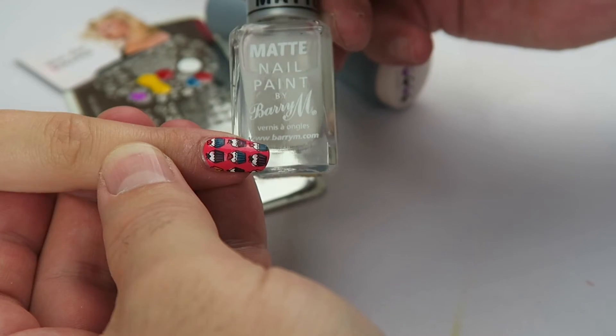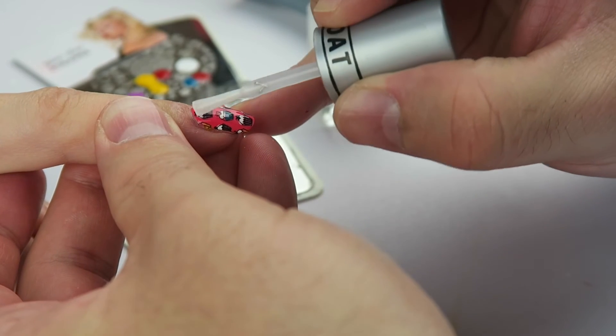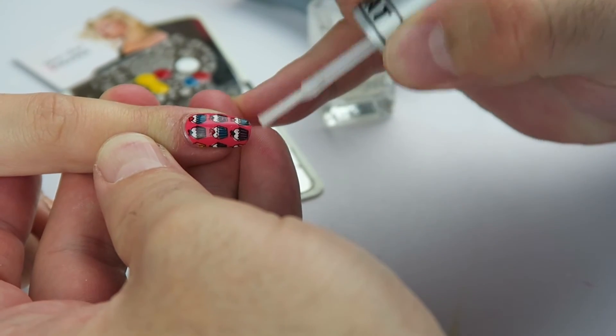The last step now guys is top coat. We are applying a layer of Barriere matte top coat to the nail to give it that nice finish.